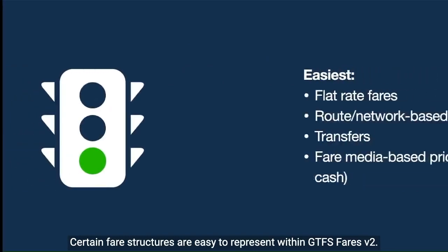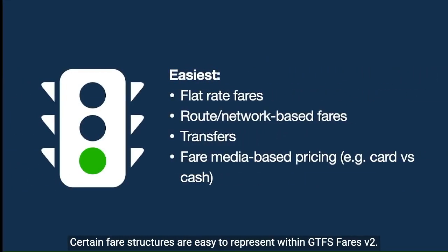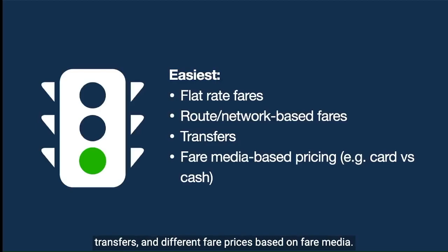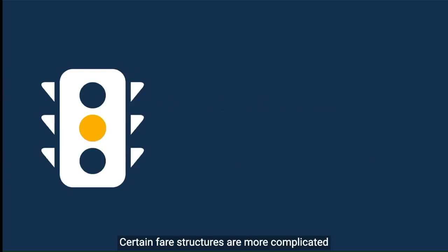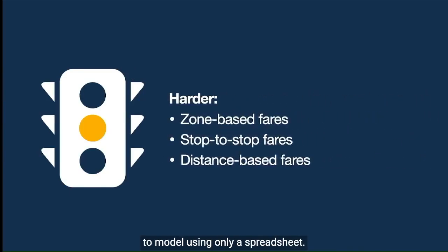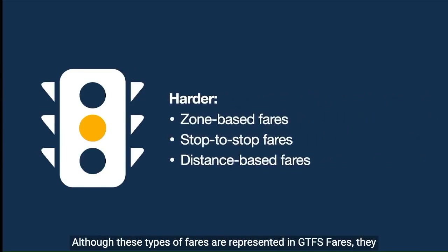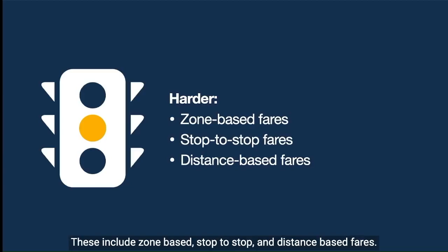Certain fare structures are easy to represent within GTFS fares v2. These include flat-rate fares, route or network-based fares, transfers, and different fare prices based on fare media. Certain fare structures are more complicated to model using only a spreadsheet. Although these types of fares are represented in GTFS fares, they require more effort and technical savvy to create and maintain. These include zone-based, stop-to-stop, and distance-based fares.